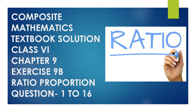Hello everyone, this is Mamata Moon. Today we will learn and solve Exercise 9B, questions 1 to 5 of Chapter 9, which is Ratio and Proportion, from the Class 6 Composite Mathematics textbook. If you have not subscribed to my YouTube channel, please subscribe and hit the bell icon for notifications. Please visit my blog mathsglad.com and join my Telegram group — the link is in the description box. Let's get started and solve some questions.